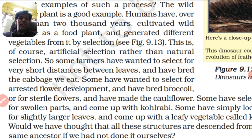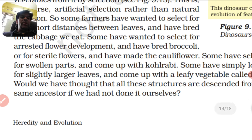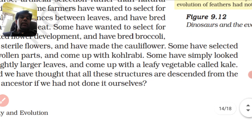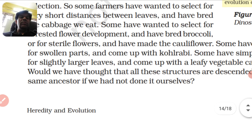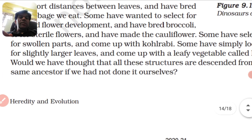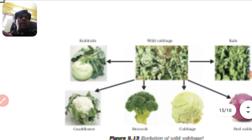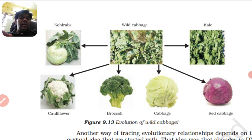This is not natural selection — it is artificial selection. Development through selection has produced broccoli, or for the sterile flower, cauliflower. Some have selected for swollen parts and come up with kohlrabi. Some have simply looked for slightly larger leaves and come up with a leafy vegetable called kale. Would we have thought that all these structures — kohlrabi, kale, red cabbage, cabbage, broccoli, and cauliflower — are descended from the same ancestor if we had not done it ourselves? These are all made from wild cabbage with little changes.